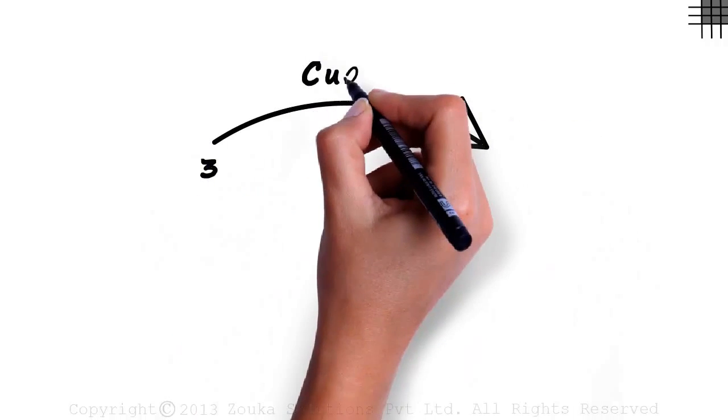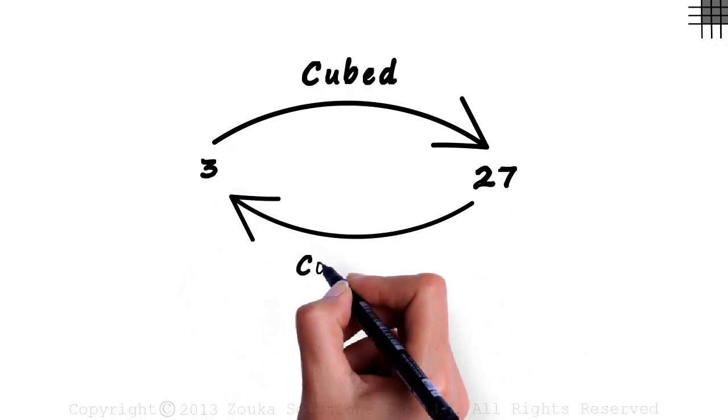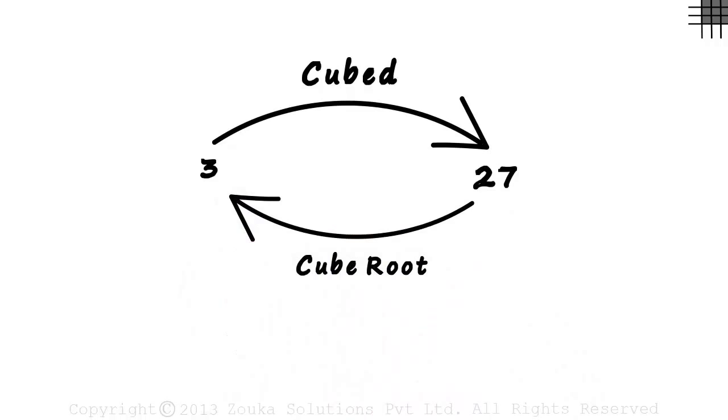By now all of us know how to find the cube of a number. 3 when cubed gives us 27, meaning 3 multiplied by 3 multiplied by 3 equals 27. So what is a cube root? The cube root of 27 is 3. This is the most important concept of cube roots. The rest of the video will focus on how cube roots are denoted and their application.